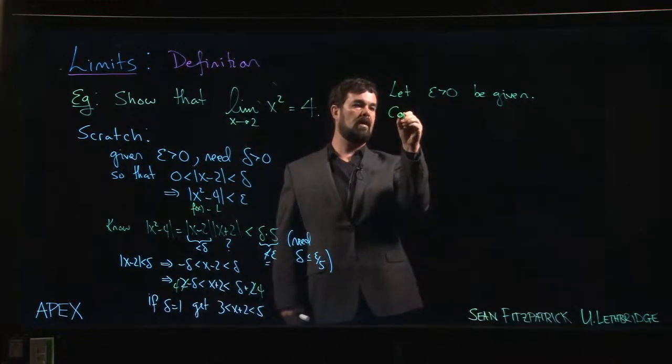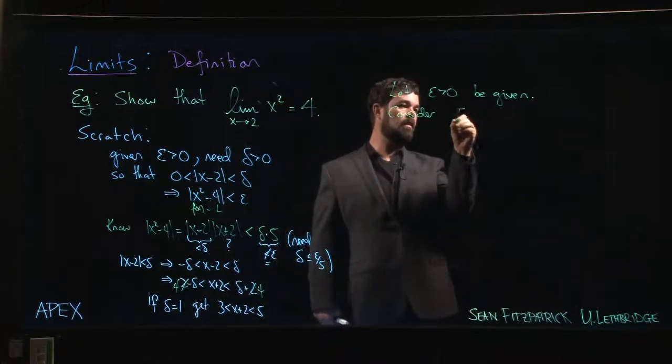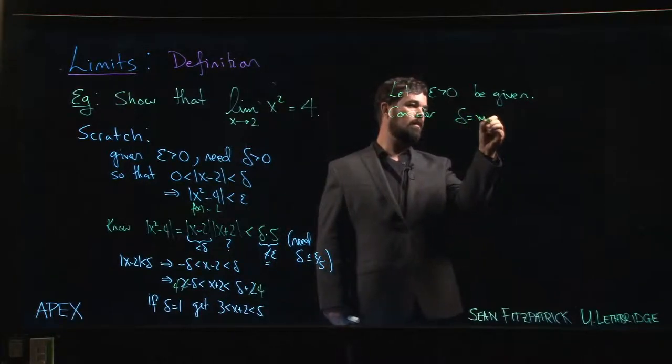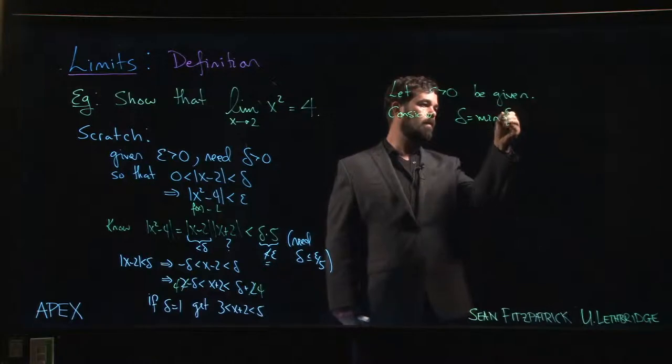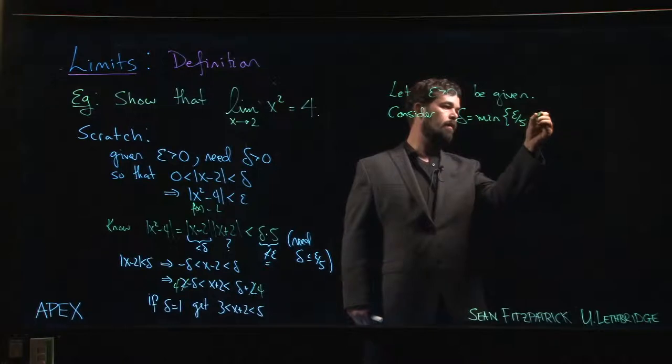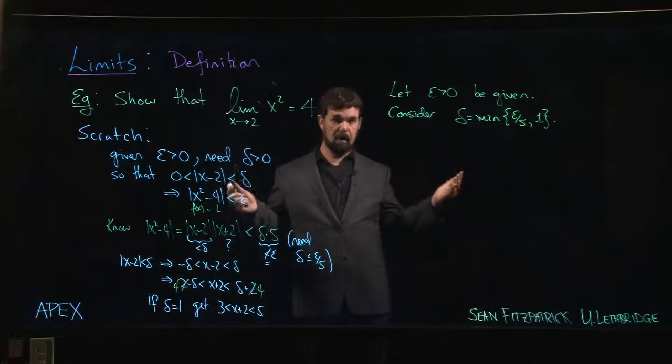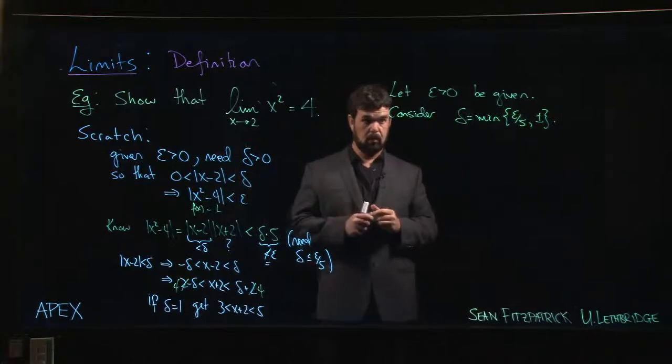So we can say the following. Let's consider delta to be the minimum of epsilon over 5 and 1. So we've made our choice of delta, and now we need to show that it works.